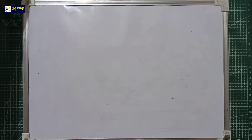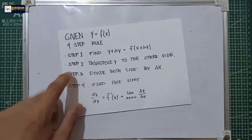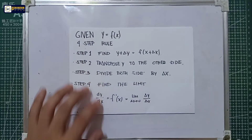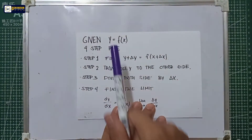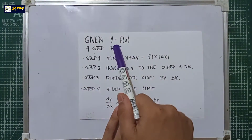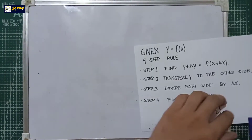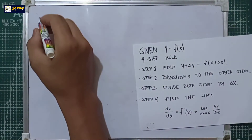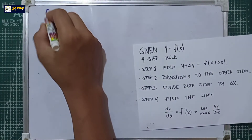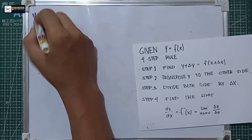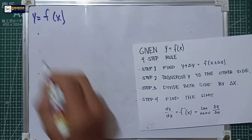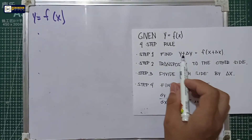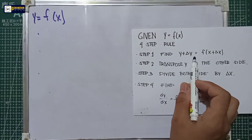Before we answer Exercise 2.1, we should understand first the four-step rule. The four-step rule: given the equation y is equal to f of x, or y is a function of x. In step one, find y plus delta y is equal to the function of x plus delta x.